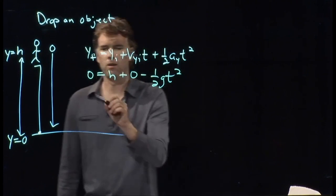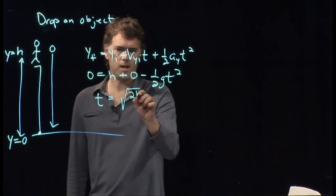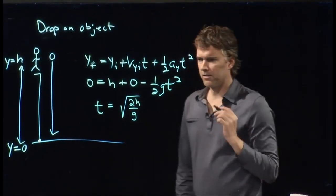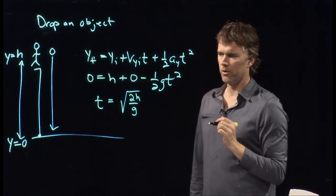And we get t equals the square root of 2h over g. So exactly the same as we had before where we tossed the rock off horizontally.